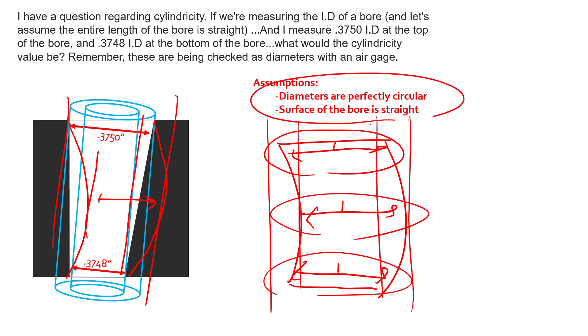And so again, these are kind of bold assumptions to make, but nonetheless, if you take two diametric measurements and you want to get a rough estimate as to what your cylindricity would be, you can make some assumptions and get close. So hopefully this answers your question and helps you out with some of your inspection processes.